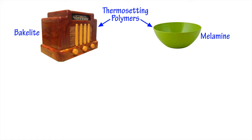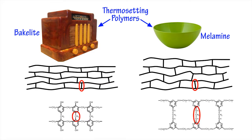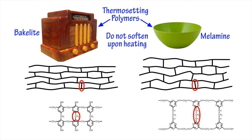This is in contrast to thermosetting polymers such as bakelite and melamine, which have crosslinks between the polymer strands. These crosslinks are comprised of atoms linked by strong covalent bonds, which are much harder to break. As a result, thermosetting polymers do not soften when heated and are unable to be remoulded once they have set.